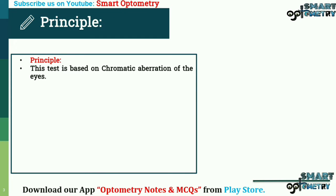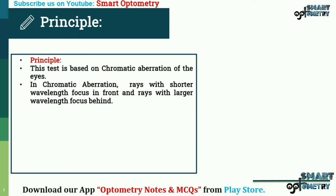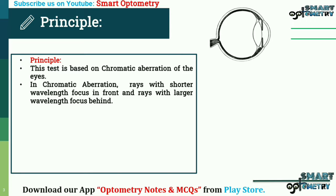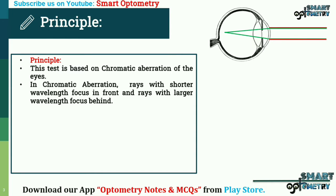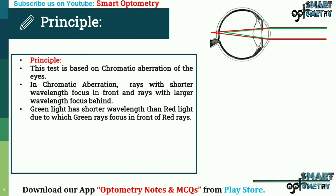Now, the principle of the duochrome test. This test is based on chromatic aberration of the eye. In chromatic aberration, rays with shorter wavelength focus in front, and rays with larger wavelength focus behind the focal point. Green light has a shorter wavelength than red light, due to which green rays focus in front of red rays.